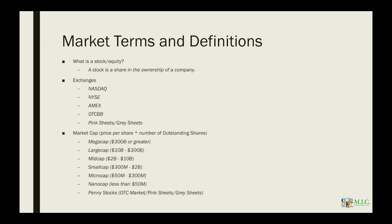Next we have market cap classifications. Mega caps are any company greater than $300 billion. Large caps are between $10 billion to $300 billion. Mid caps are $2 billion to $10 billion. Small caps are $300 million to $2 billion. Micro caps are $50 million to $300 million. Nano caps are less than $50 million. And then we're back down to true penny stocks, which trade on the OTC market, pink sheets and gray sheets. Be familiar with what a penny stock is versus a small cap — there's a big difference, especially in what they are required to file and required by regulation to uphold in terms of shareholder equity.